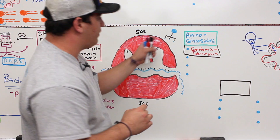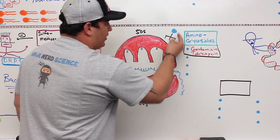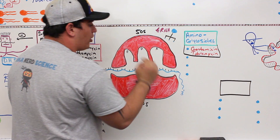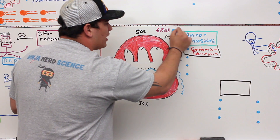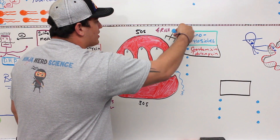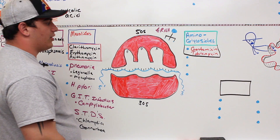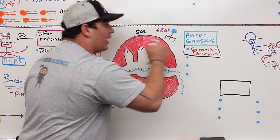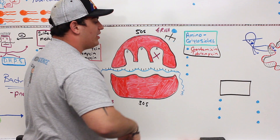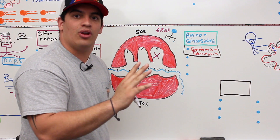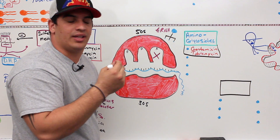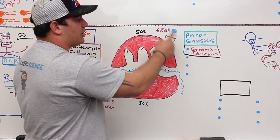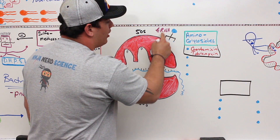Aminoglycosides target the 50s subunit. The tRNA carries anticodons complementary to the codons in the mRNA and carries the specific amino acid for those codons. When the tRNA comes into the A site, the aminoglycosides block it from entering. By blocking the tRNA from the A site, you prevent the amino acids — the building blocks for proteins — from being incorporated, so the protein cannot be elongated and the bacteria cannot survive.